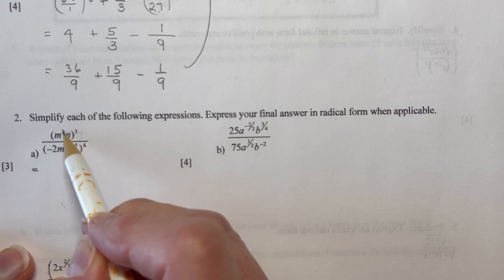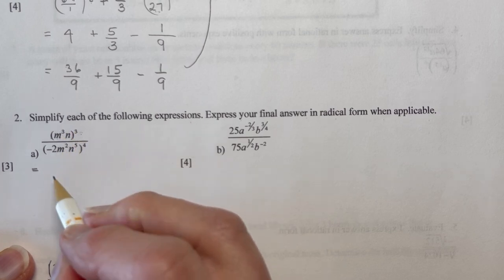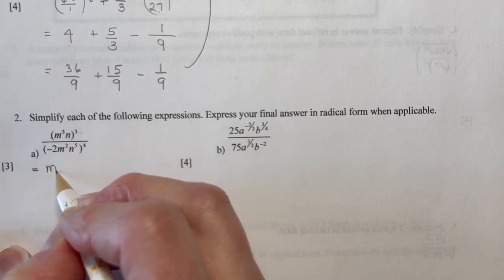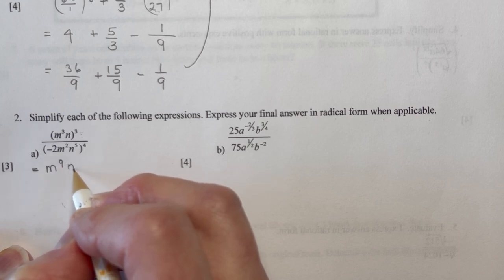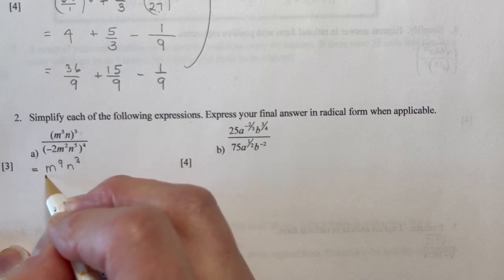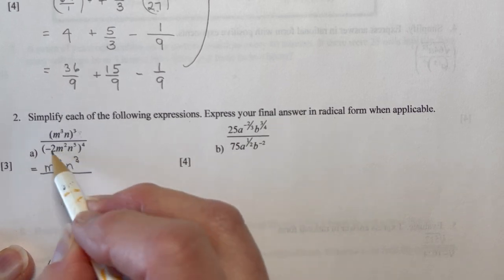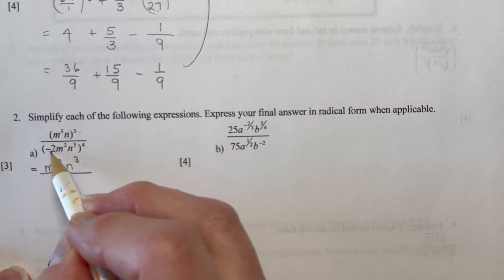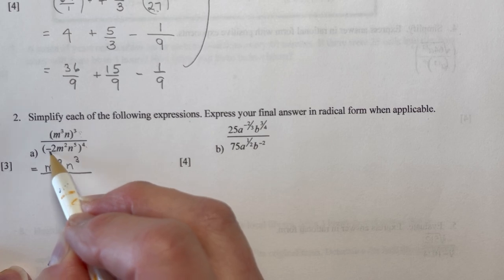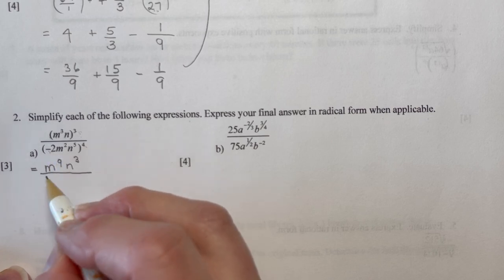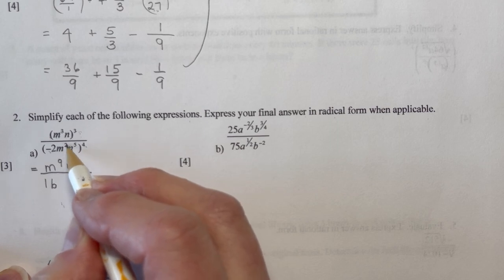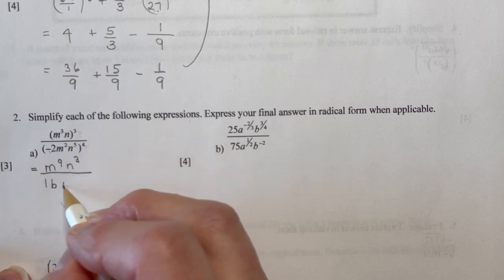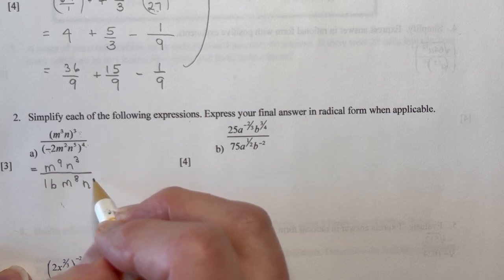So because this is power to a power, I'm multiplying. So that's going to give me m to the ninth, n to the third. And in the denominator, I have minus 2 to the power of 4. So because it's an even exponent, this is going to make this positive. And 2 to the power of 4 is 16. And then m, 2 to the fourth, that's m to the eighth. You're multiplying, remember. And n to the twentieth.